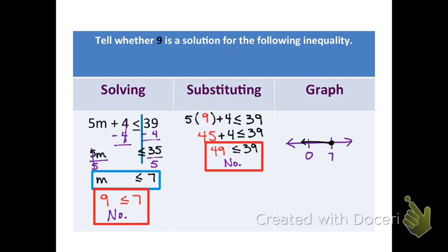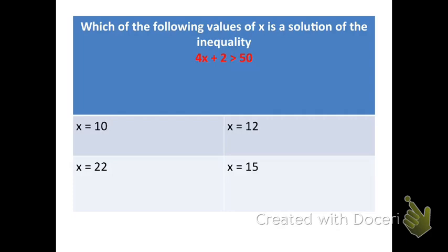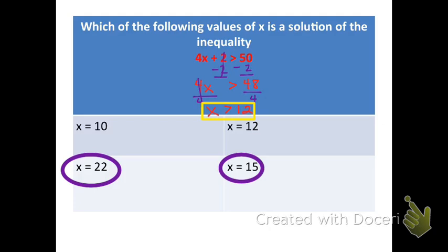Which of the following values of x is a solution for the inequality? First, solve it: subtract 2 from both sides — 4x is greater than 48; divide by 4, giving x is greater than 12. Now look at all values greater than 12. From the choices of 10, 12, 15, and 22, the two solutions are 22 and 15. The values 10 and 12 are not solutions.